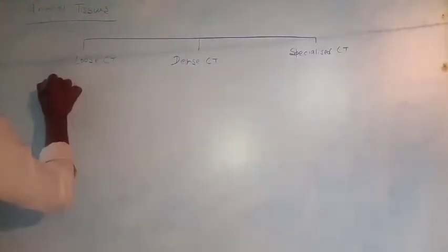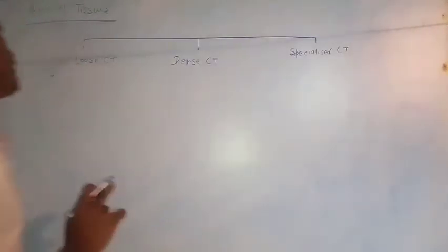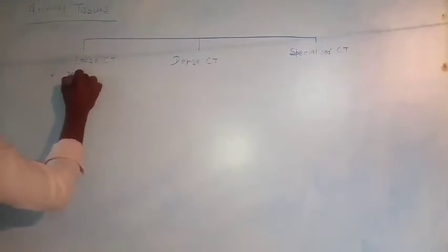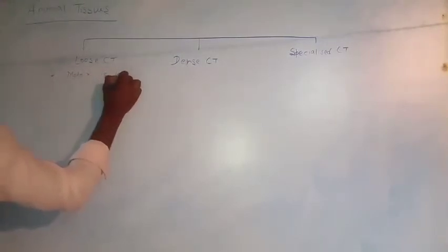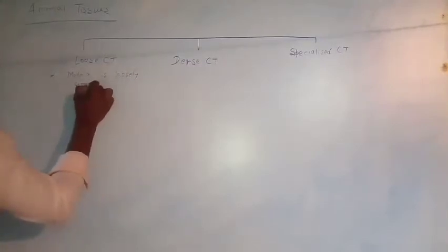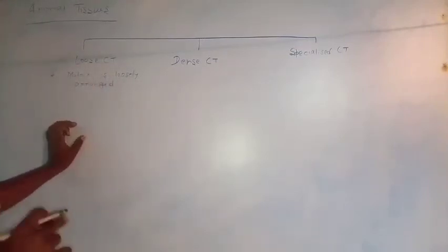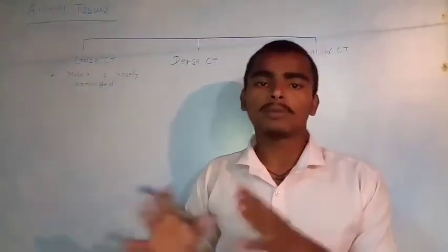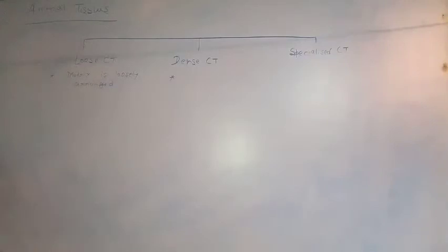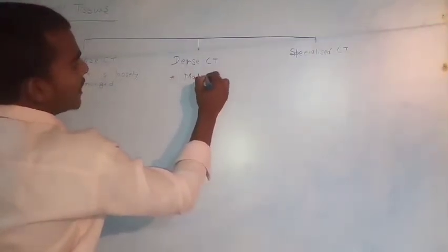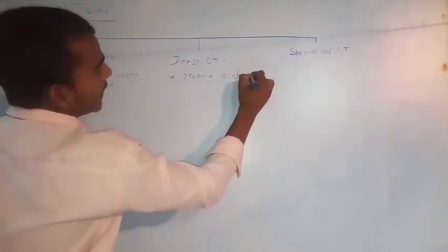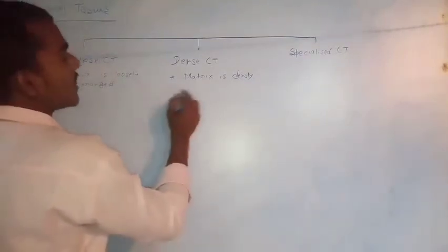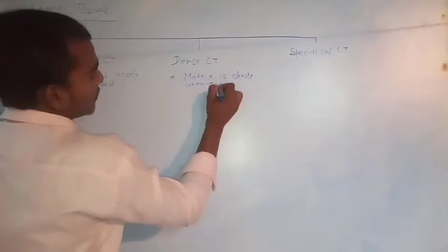In loose connective tissue, the matrix or ground tissue is loosely arranged — this is the key meaning of 'loose.' In dense connective tissue, the matrix is densely arranged. What is arranged in this matrix? The fibers and cells are densely arranged in the case of dense connective tissue.